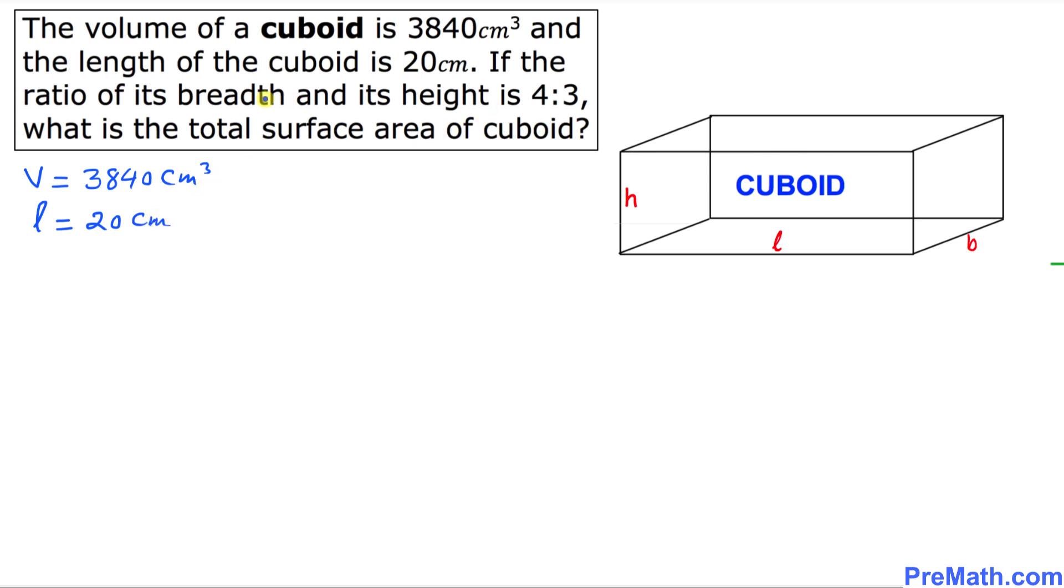The next thing is we know the ratio of breadth and the height is 4 to 3. So I'm going to write down the ratio between b and h is 4:3, or this could also be written as b/h equals 4/3.